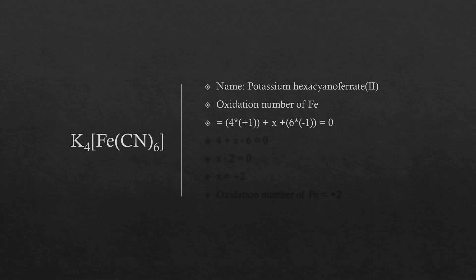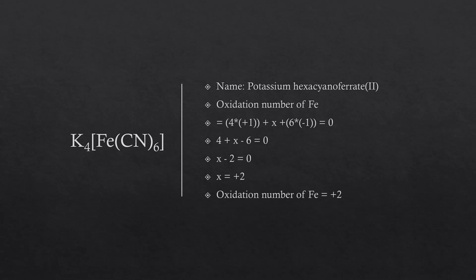The oxidation number of Fe is X. There are 6 cyano groups and the oxidation number of CN is minus 1. Therefore, 4×(+1) + X + 6×(−1) = 0, giving 4 + X − 6 = 0, so X − 2 = 0, meaning X equals plus 2. The oxidation number of Fe is plus 2.